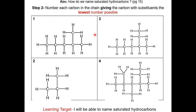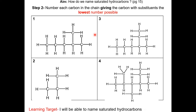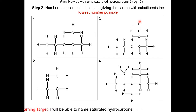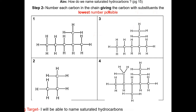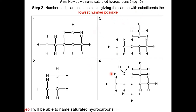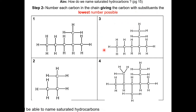On page 16, take a moment to number each carbon in the chain, giving the carbons with substituents the lowest number possible in these 4 molecules. Try to do this yourself. Pause the video and resume when completed.